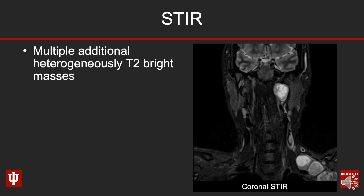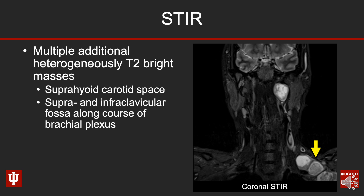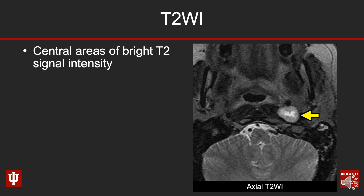Next up is the coronal STIR image. You'll see there are additional masses within the neck — the one in the supraglottic larynx wasn't the only one. The yellow arrow is pointing to a mass found in the suprahyoid neck in the carotid space, adjacent to the carotid artery. We also have additional masses in the supra- and infraclavicular fossa on the left, coursing along where we'd expect the brachial plexus — an important clue to help come up with the diagnosis.